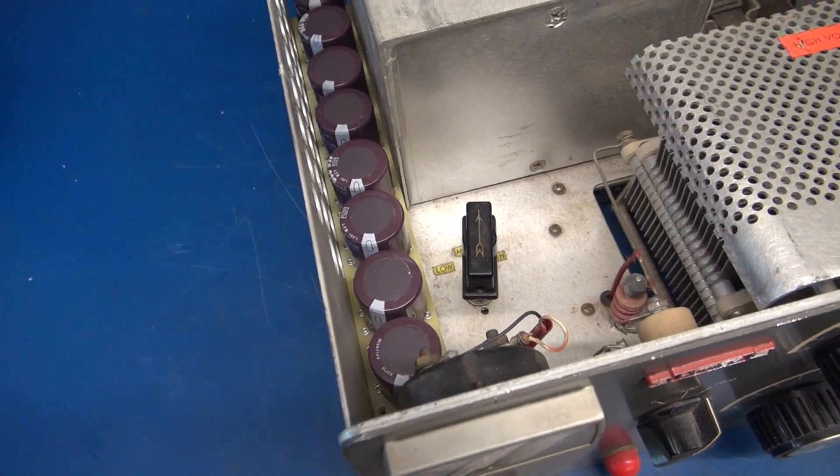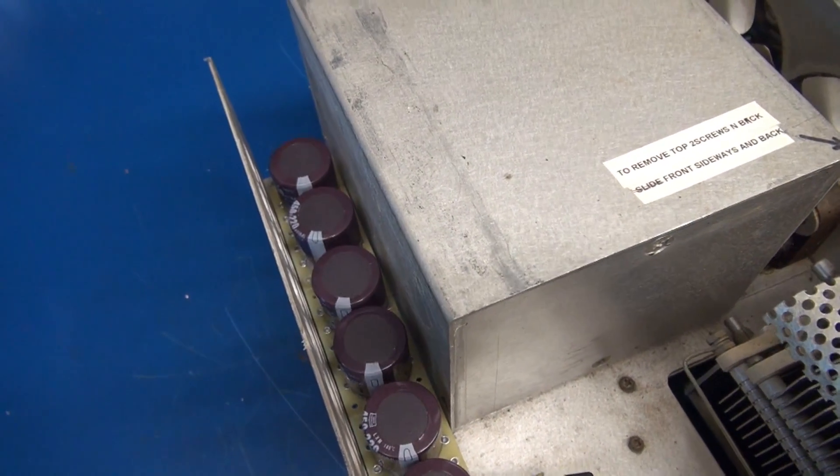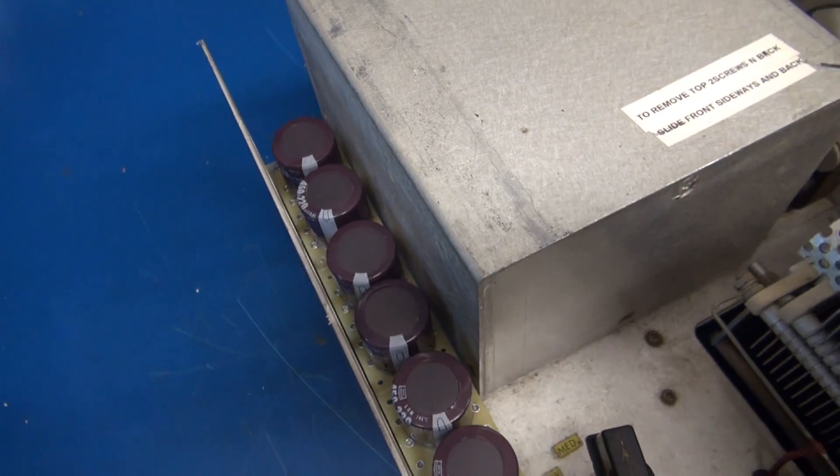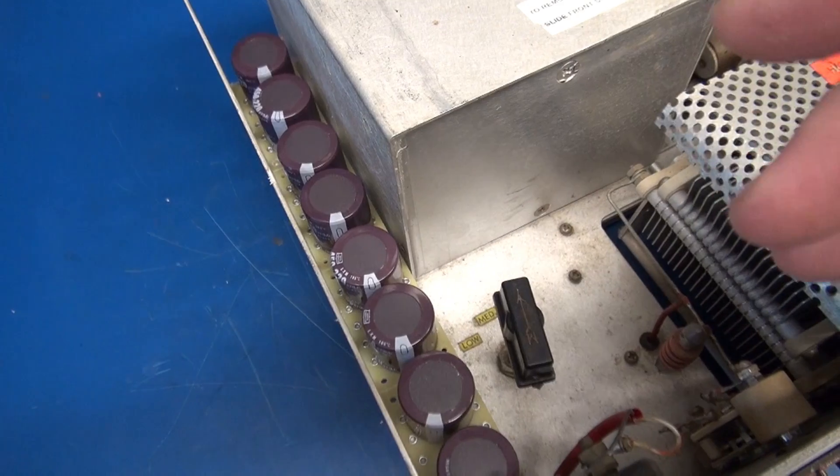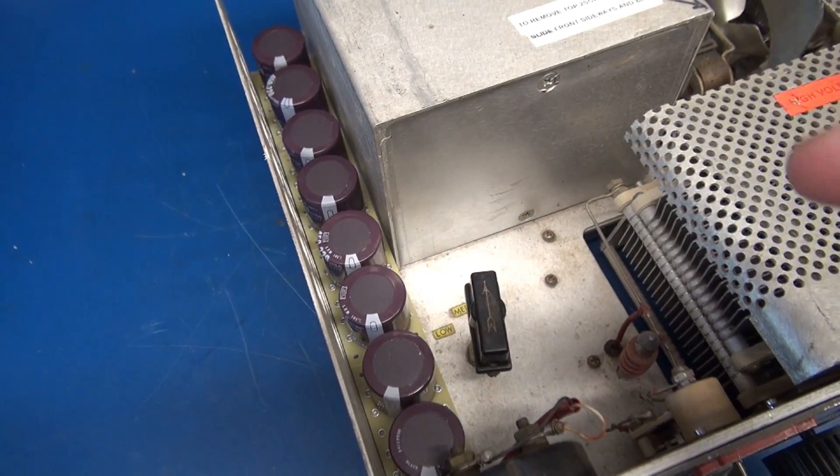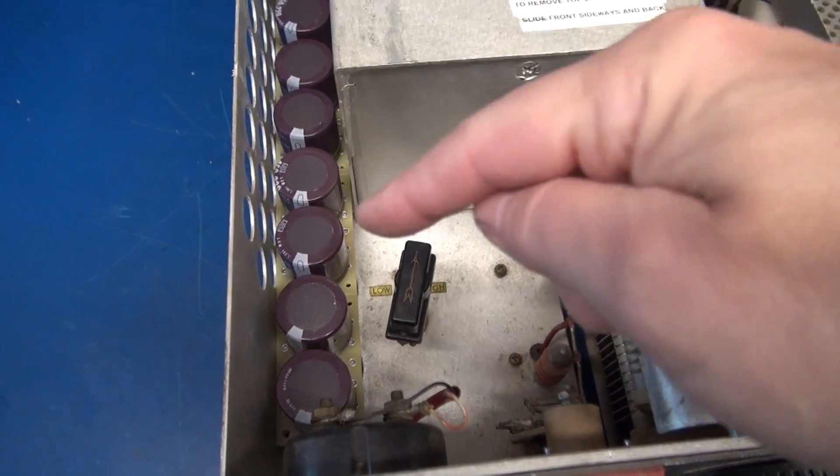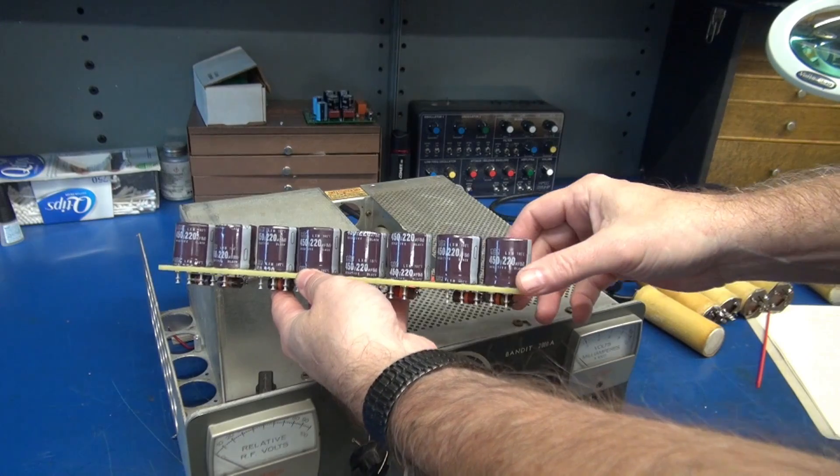So here's the new filter bank sitting in place. It is built on 2.65 by 1.5 inch turret boards and these are linked boards. So there are actually four different boards that come in this style and you can break them apart for your different applications. So if you wanted to do the six caps here, you could simply separate those modules and turn them.